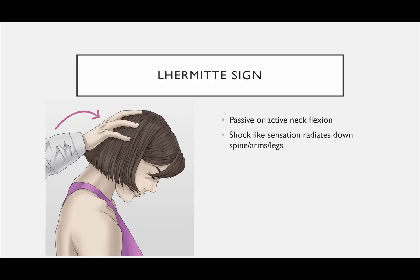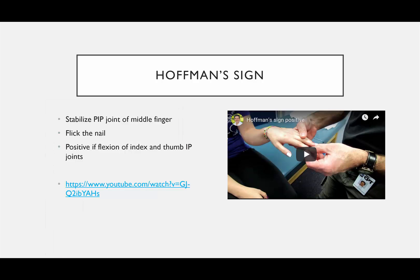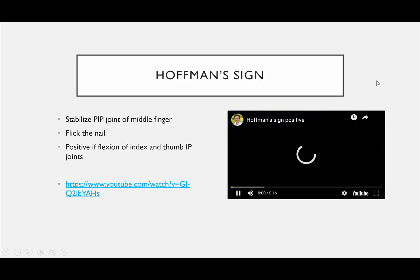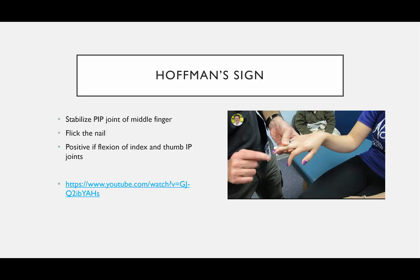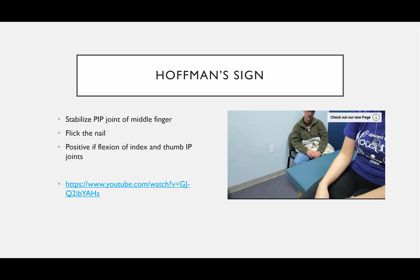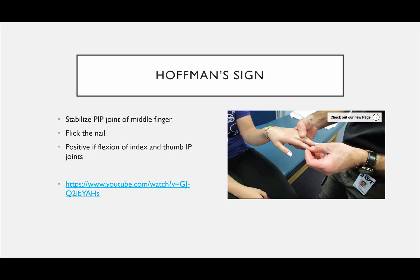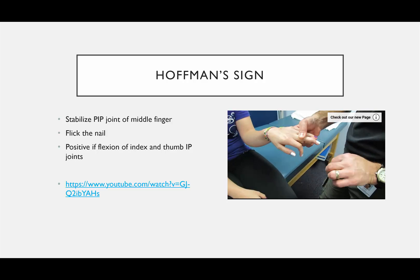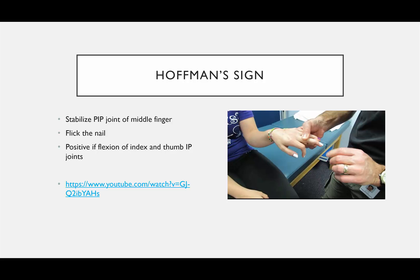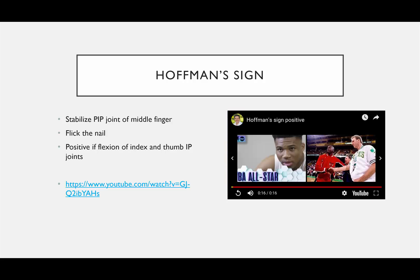Lhermitte's sign is a test for myelopathy where the patient gets a shock-like sensation radiating down the spine, arms, or legs during the maneuver. Hoffman's sign is an upper motor neuron sign for myelopathy — you can see the reflexive flexion of the index finger and thumb, indicating the patient has myelopathy in the cervical spine.